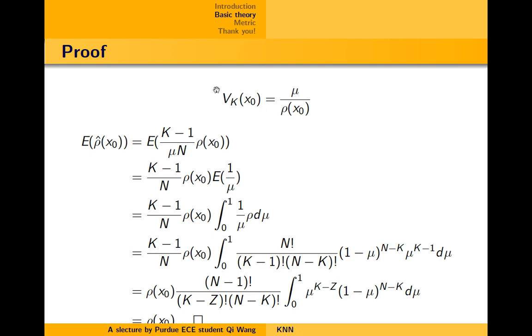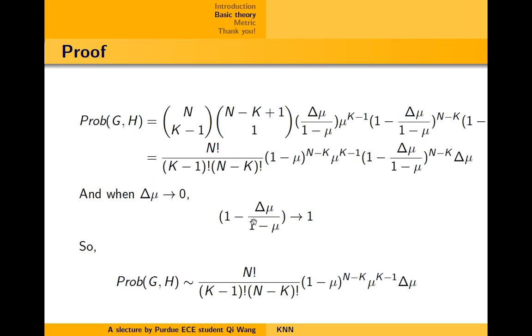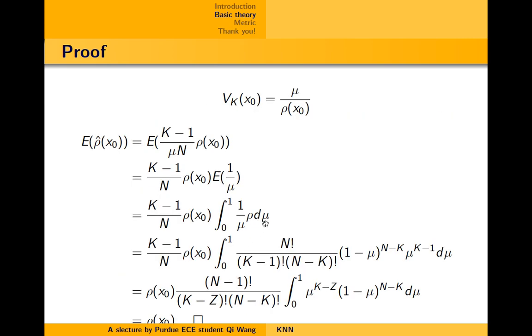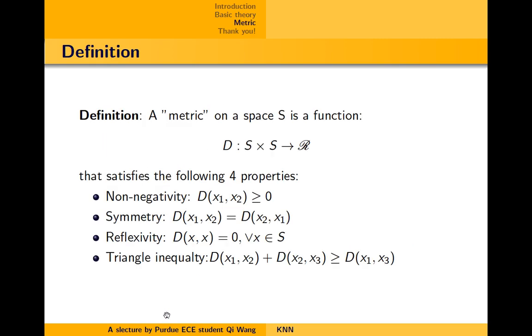Okay, and note that the volume of the neighborhood around x₀ can be calculated like this. And so, we plug this into the calculation of the estimation of the density function of x₀, and we get this. So, this is constant, and we get it out of the calculation of the expectation. So, essentially, the expectation is calculated as the integral of 1 over μ, and ρ here is just as we calculated above. So, we just plug in this, and we get this. Note that this is a gamma function, and it cancels out with this one. Then, here we go, we get exactly what we want.